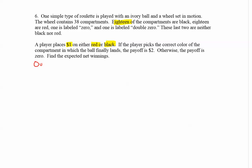I'm going to start by listing my outcomes — my wins and my losses. If I win, that means the ball lands on red (it's going to be the same expected value for black). The value of winning is how much money you win after you deduct the cost to play the game. The payoff is two dollars, but we have to pay a dollar, so the net winning is just one dollar. The loss would be negative one dollar, because that's the cost of the ticket.